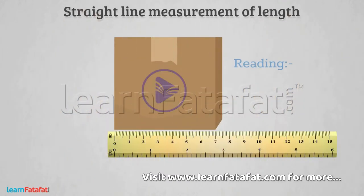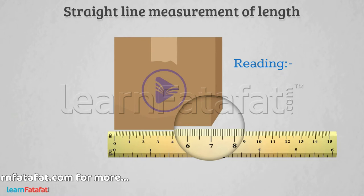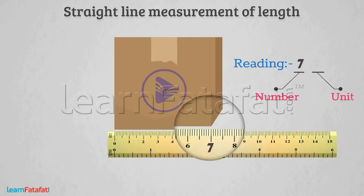Notice the reading at the other end of the box. In case of right placement, the reading comes out to be 7. We provide any measurement with the number and its unit. Here, the unit is centimeter. So, correct result of measurement is 7 centimeters.